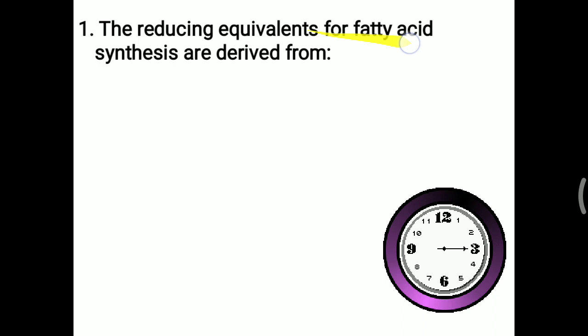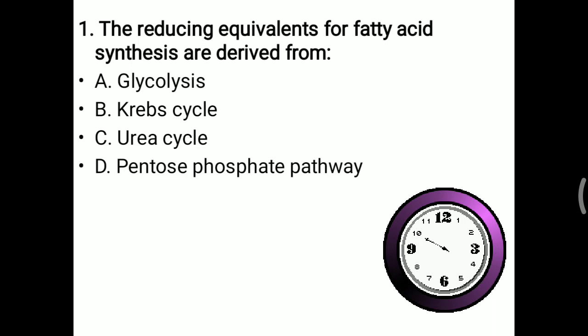First question: the reducing equivalents for fatty acid synthesis are derived from. For fatty acid synthesis, the reducing equivalent needed is NADPH. Options are: glycolysis, Krebs cycle, urea cycle, or pentose phosphate pathway. Glycolysis gives the reducing equivalent NADH.